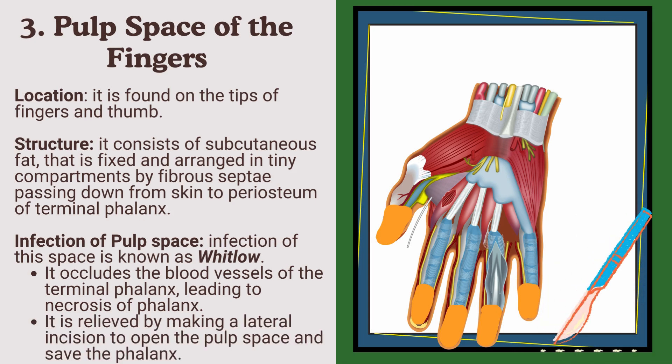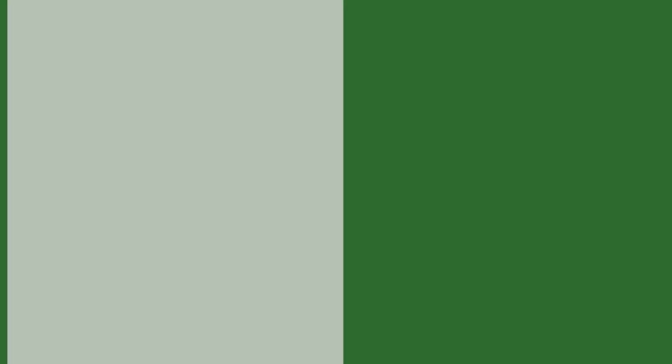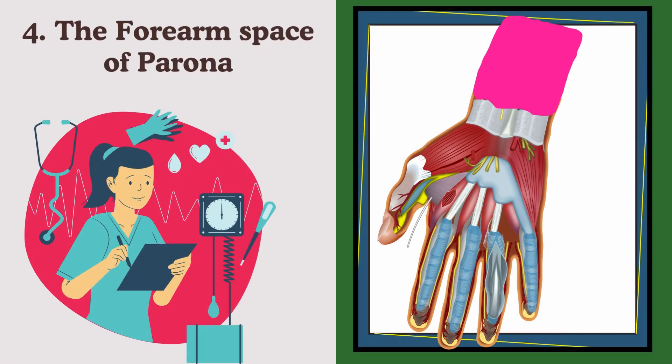Whitlow is relieved by making a lateral incision to open the pulp space and save the phalanx. The last important space is the forearm space of Parona.